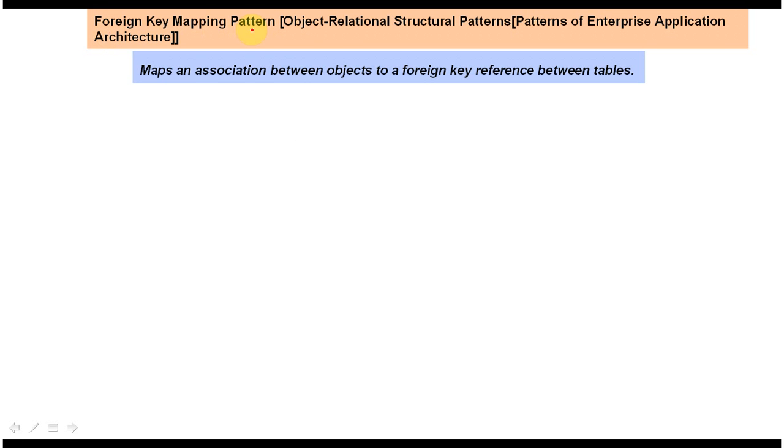Hi, today I will cover the foreign key mapping pattern. This foreign key mapping pattern belongs to object-relational structural patterns, and object-relational structural patterns belong to patterns of enterprise application architecture.